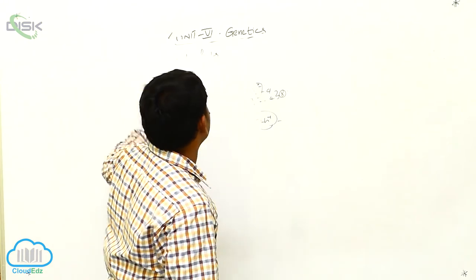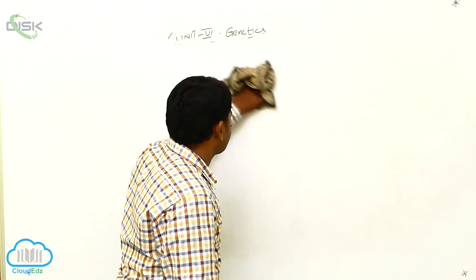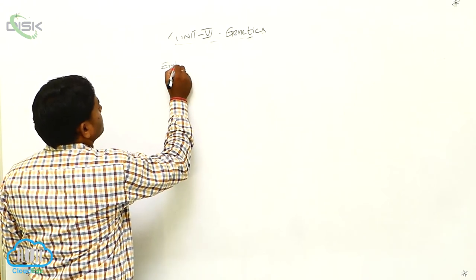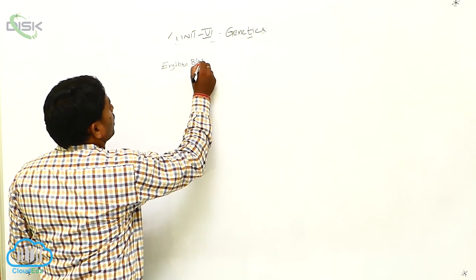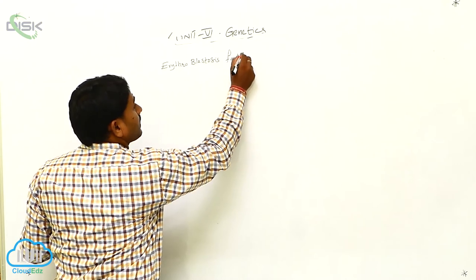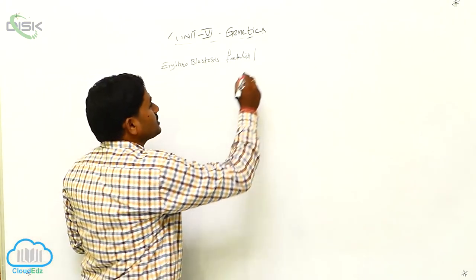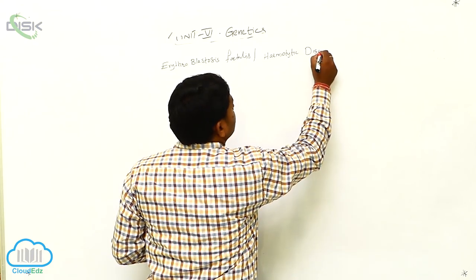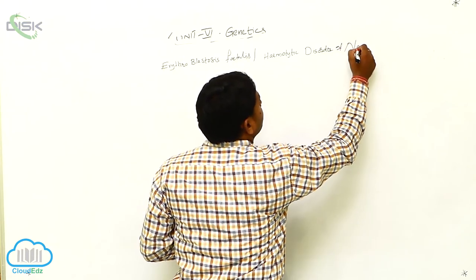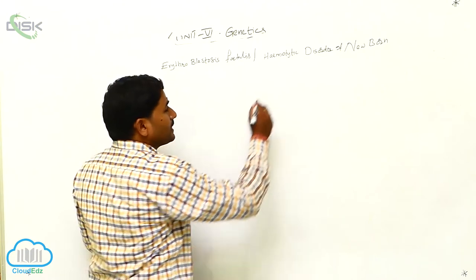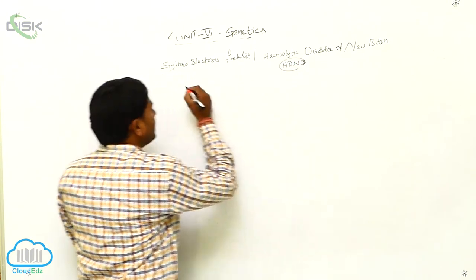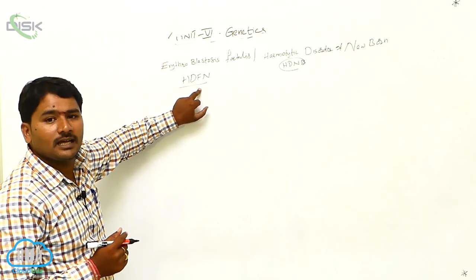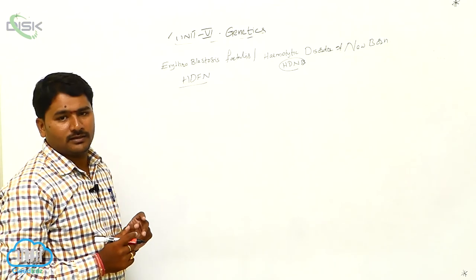There is a genetical incompatible problem called erythroblastosis fetalis. It has different names: it is also called hemolytic disorder of newborn, abbreviated as HDNB, and it is also called HDFN — hemolytic disorder of fetus and newborn. Simply, this is hemolytic anemia.